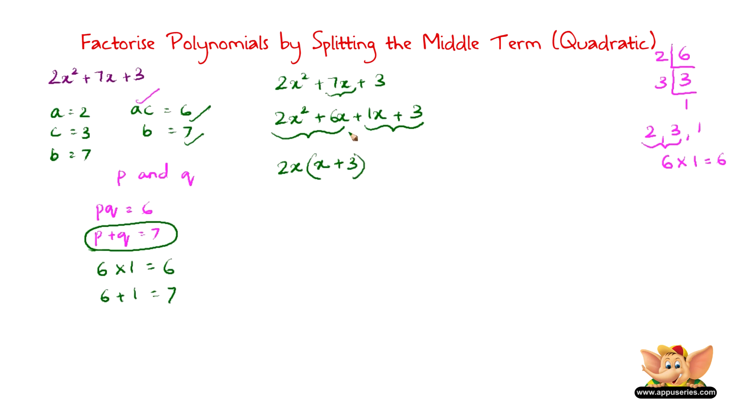Now grouping these two terms I take out 2x as a common and 2x into x gives us 2x squared plus 2x into 3 gives us 6x. Now here the common is 1. So 1 into x gives us 1x, 1 into 3 gives us 3.